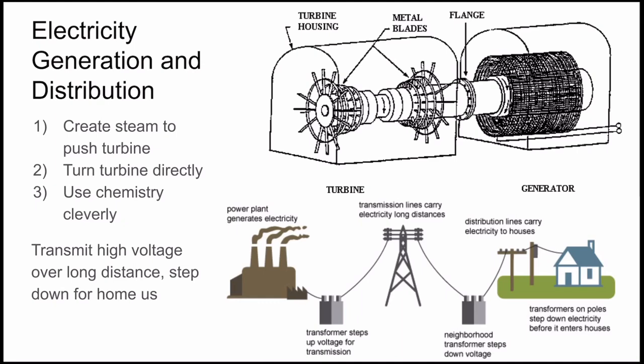Before we begin talking about the sources, let's talk a bit about electricity. Electricity is the transfer of energy by the movement of electrons, usually through conducting metals. Electricity is convenient because it can move a great distance very quickly, although it is difficult to store. There are many ways to generate it. The most common ways use a turbine, a wheel that changes the force of moving gas or liquid into rotational motion. This turbine then turns an electric generator, which moves a conducting material, like a wire, through a magnetic field. This compels the electrons to begin moving.